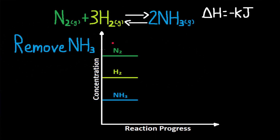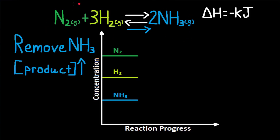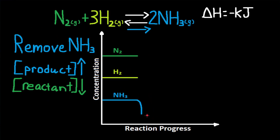If NH3 is removed, describe the effect on the graph. Point at what is being removed, so this is a shift right. A shift right points at the products so the products increase, and it doesn't point at the reactants so the reactants decrease. NH3 is removed so NH3 decreases first, then as a product it will increase — however it won't increase more than its initial amount. H2 and N2 are reactants so they decrease. Remember that coefficients determine how much each species decreases.